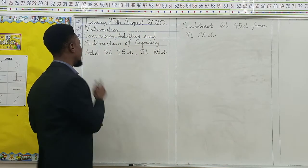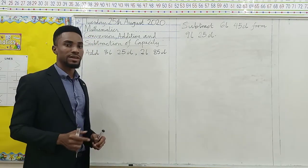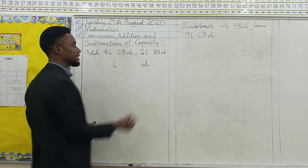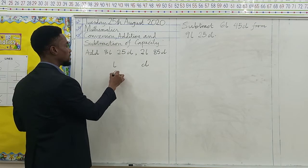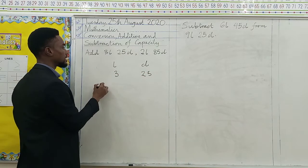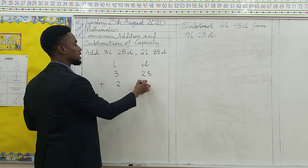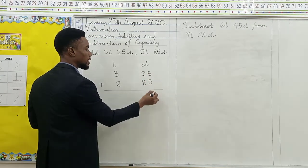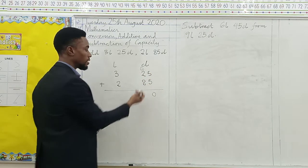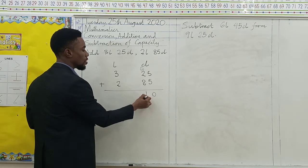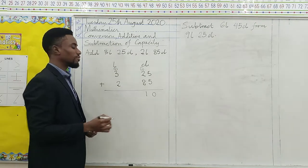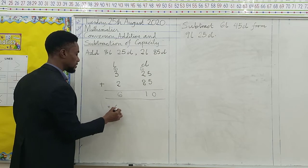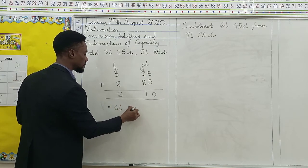In the first example, we add 3 liters 25 centiliters and 2 liters 85 centiliters. We set out our liters column and centiliters column. We have 3 liters 25 centiliters, plus 2 liters 85 centiliters. 5 plus 5 is 10 — write down 0 and carry 1. 1 plus 2 is 3, 3 plus 8 is 11 — write down 1 and carry 1. 1 plus 3 is 4, 4 plus 2 is 6. Our answer is 6 liters, 10 centiliters.